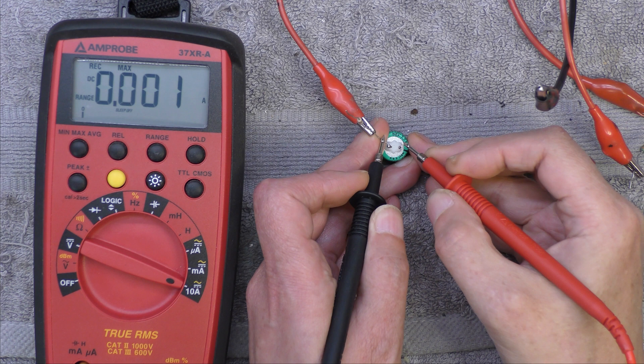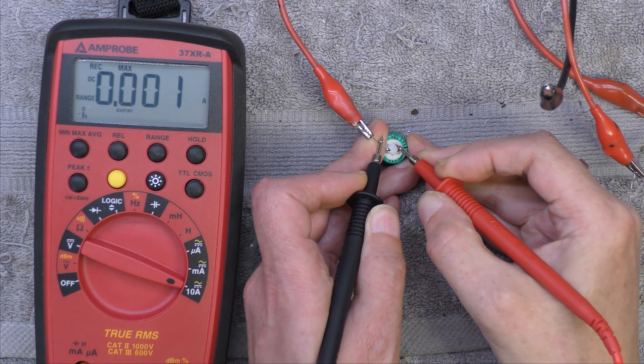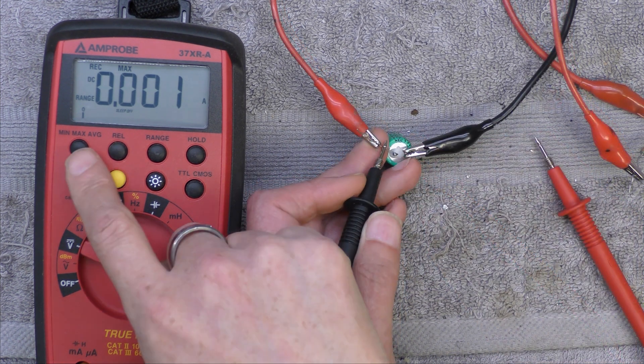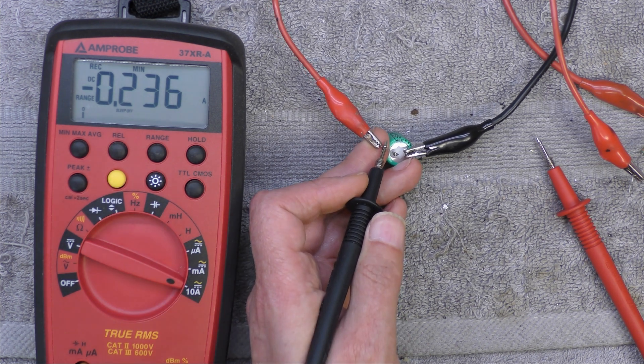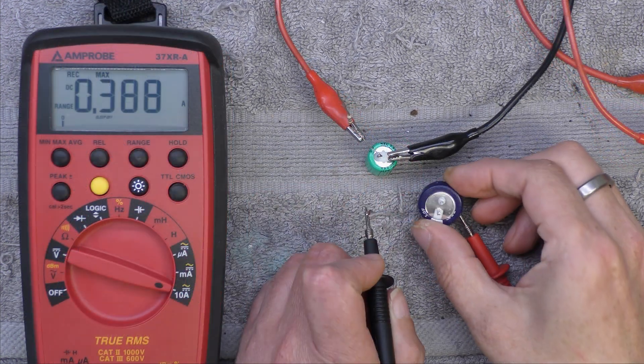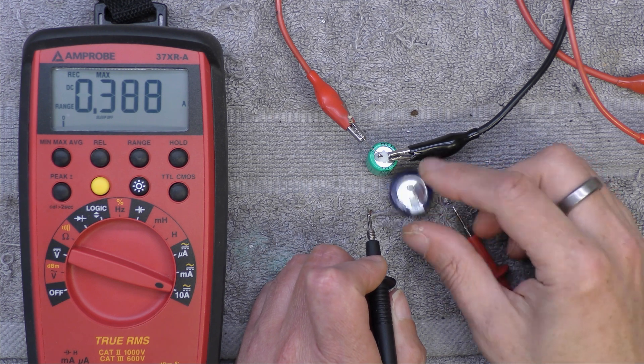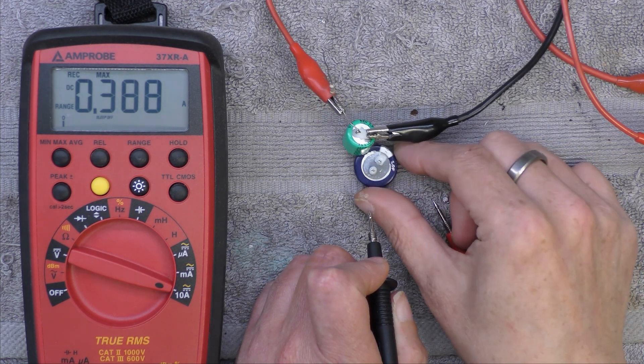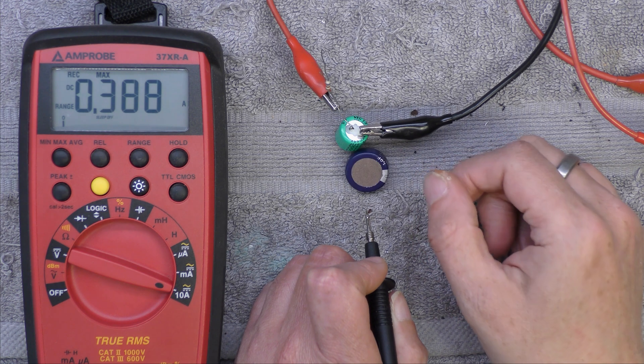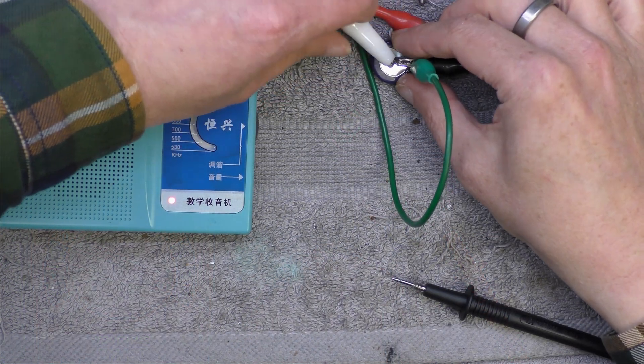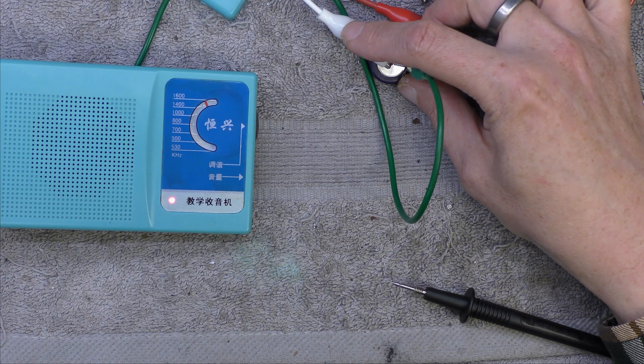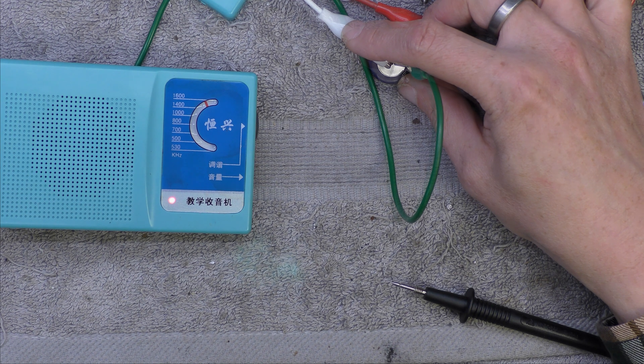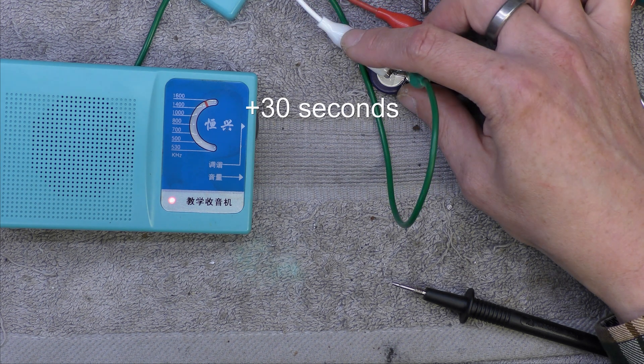Let's see if I can get a maximum current reading here. 236 milliamps. 388 on that one, but it is a one farad, and that's 0.2, so it's going to have a lower internal resistance. That's lasting longer than I thought.